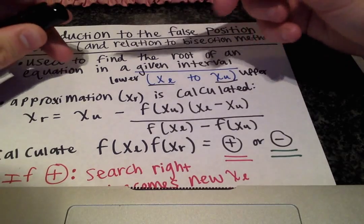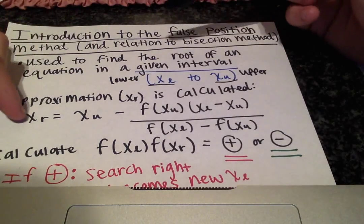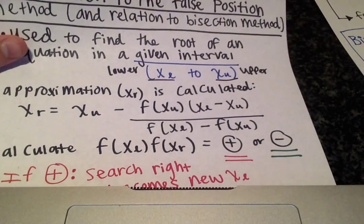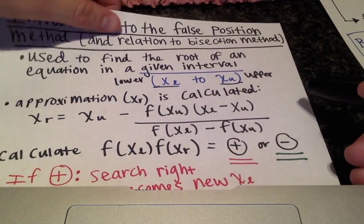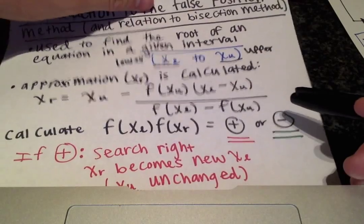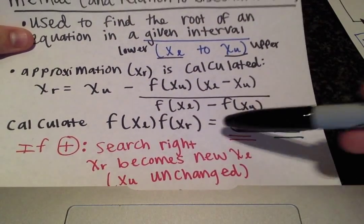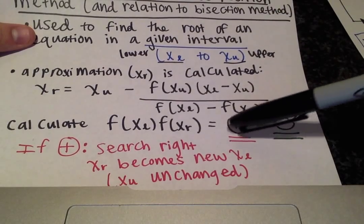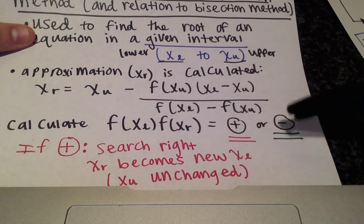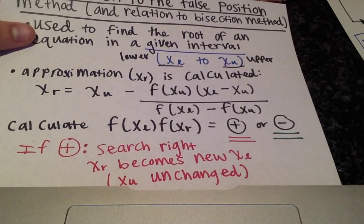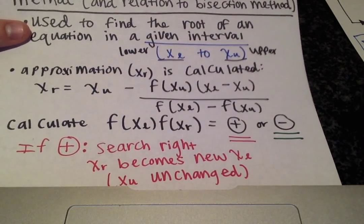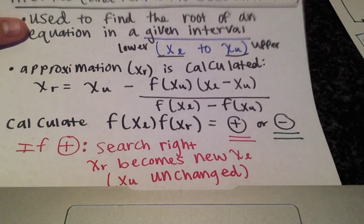And then after we calculate our x_r value or our approximation, we'll need to calculate the product of f of x_l and f of x_r. And similar to the bisection method, you'll either get a positive or negative value which will indicate which direction to search and it will also tell you what your new limits are for the range of your search.